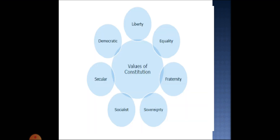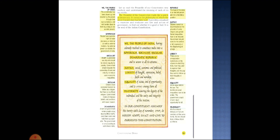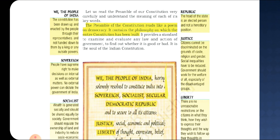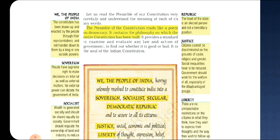Now, coming to the values of the Constitution — I hope you all might have read the preamble, which is given on the first page in most NCERT books. Let's read the preamble. The preamble of the Constitution reads like a poem on democracy. It contains the philosophy on which the entire Constitution has been built.